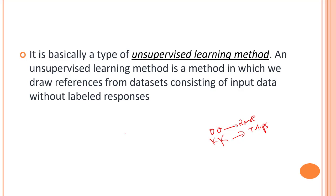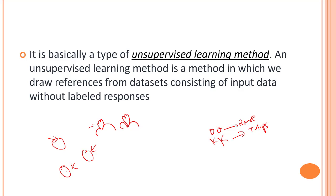Now let's say you encounter a fancy new flower that you don't know the name of. But you notice these flowers appear in this area, this area, and this area of the park. You can tell that all of these are the same flower — they look the same and appear in similar spots — even though you don't know which flower it is. What you are doing here is identifying groups of similar-looking objects.